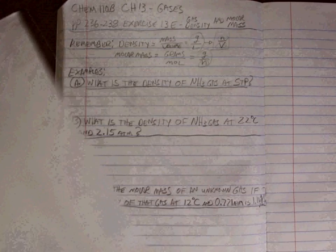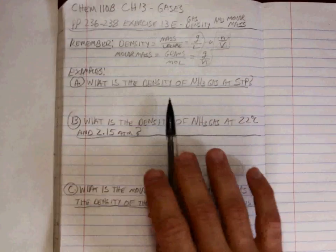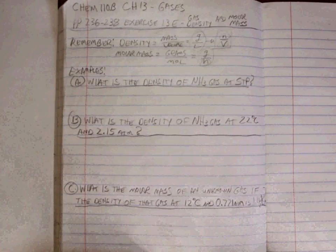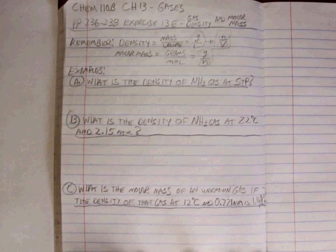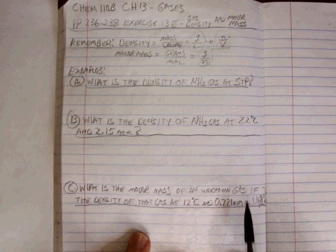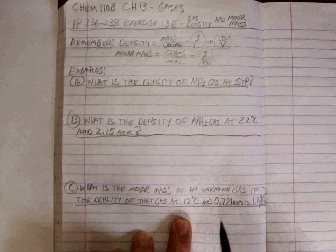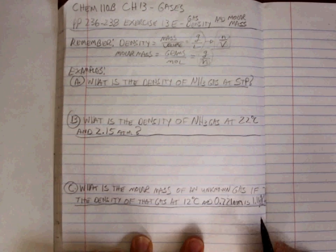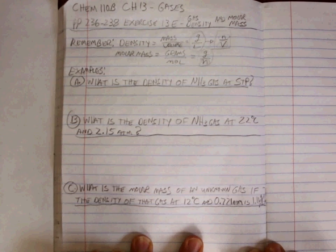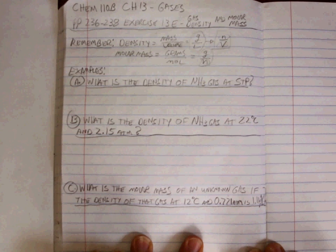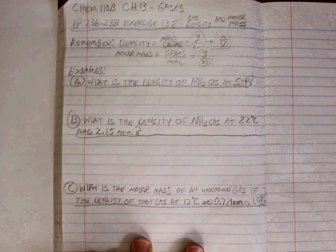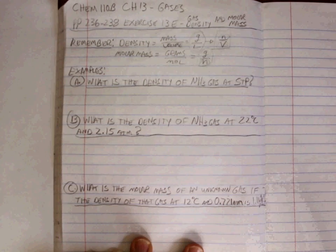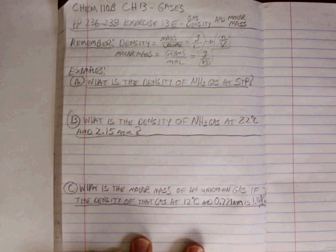And you're going to need to find the moles to do the molar mass problems. Our three example problems are: what is the density of NH3 gas at STP? What's the density of NH3 gas at 22 degrees Celsius and 2.15 atm? What is the molar mass of an unknown gas if the density of that gas at 12 degrees Celsius and 0.771 atm is 1.11 grams per liter? Pause. Try those problems. Use the ideal gas law and this information to manipulate things and then back at them.